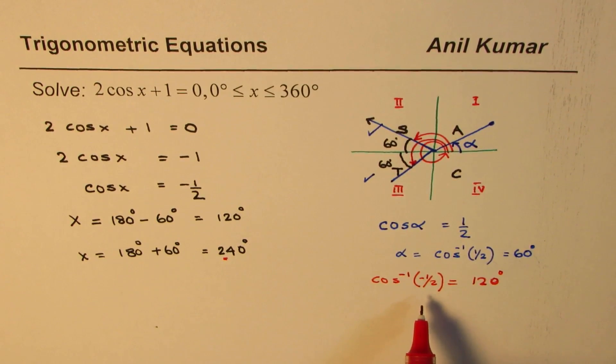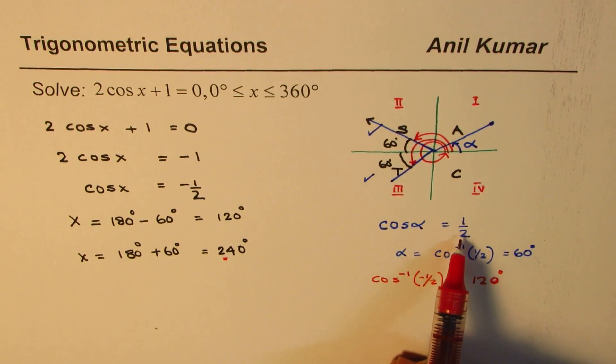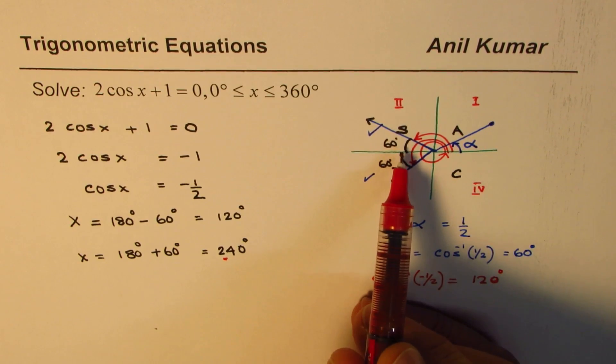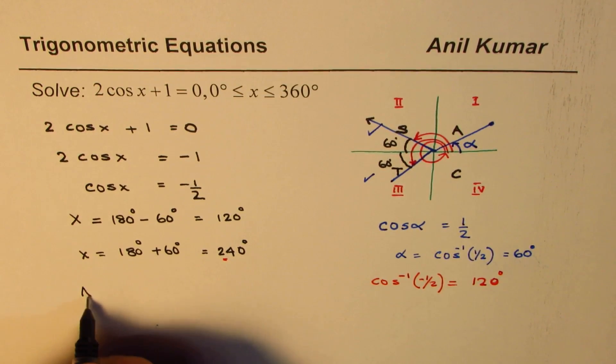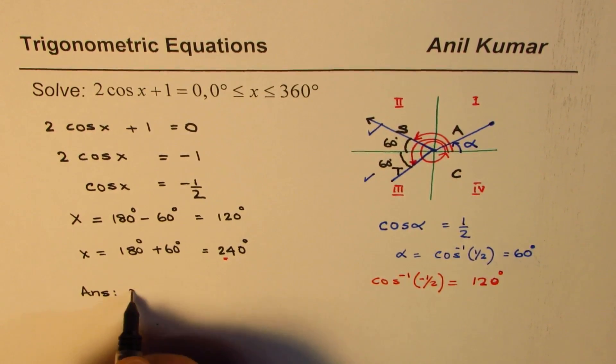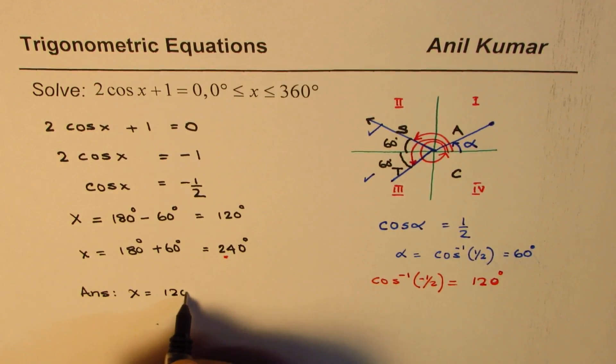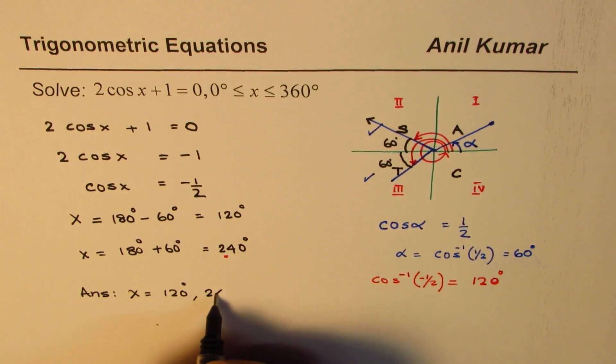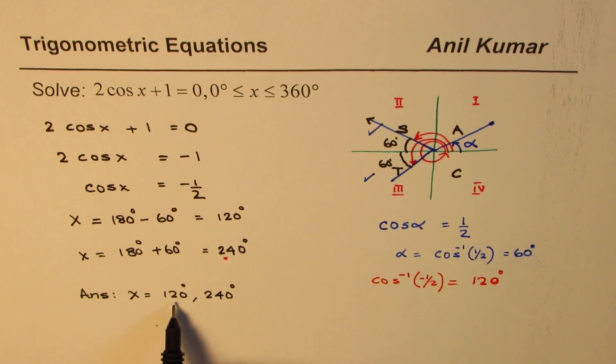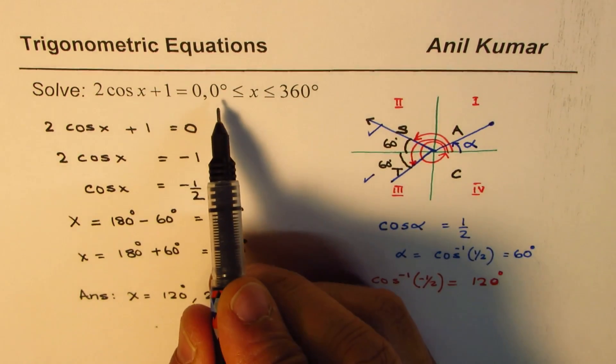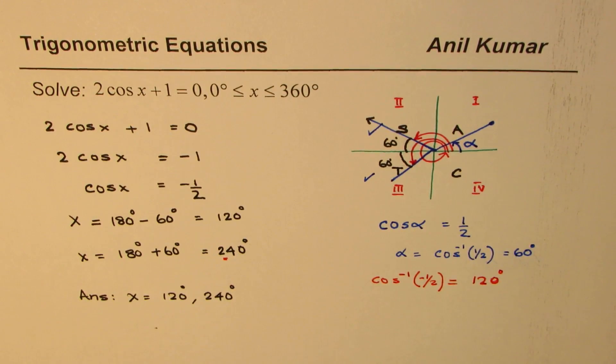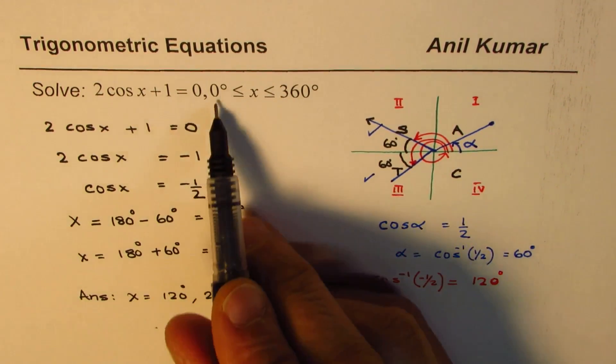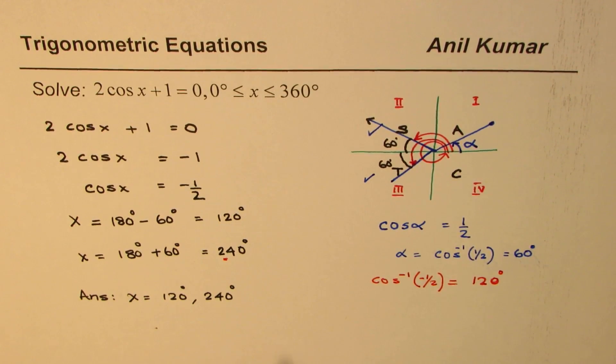Therefore, my suggestion is always find the acute angle and then relate it with the quadrants as we did here. And then write down your answer. So we can write down that solution of this equation is x equals to 120 degrees and 240 degrees. These are possible solutions within the given domain 0 to 360 degrees. So always restrict your solutions to all possible solutions within the given domain.